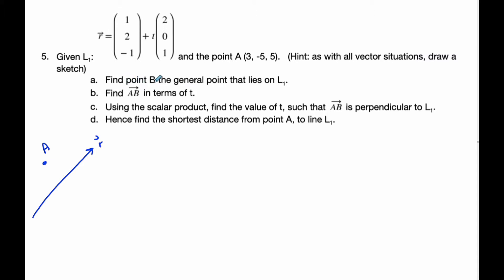Point B (x, y, z) is simply going to be 1+2t, 2, and -1+t. This is every single point on the line, so I'm going to consider this as point B. Now I'm going to find vector AB.